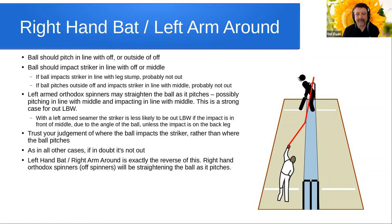If the bowler is a fast bowler or seamer, the striker is less likely to be out LBW if the impact is in front of middle stump due to the angle of the ball, unless the impact is very close to the stumps on the back leg. Trust your judgment of where the ball impacts the striker — it is much more likely to be accurate than your judgment of where the ball pitches. Remember the mantra: if in doubt, it's not out. A left-hand batter facing a right-arm bowler bowling around the wicket is exactly the reverse of this, and again the right-arm orthodox off-spinner will straighten the ball and may have a stronger case for taking wickets in that configuration.